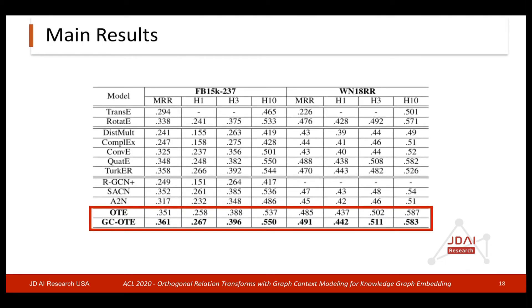This table shows the performance comparison of our model with all the baselines. We can see OTE alone already outperforms RotateE, and adding graph context to OTE achieves the best results among all these models. The numbers are taken from published papers. We also observe that adding graph context helps on Freebase data more than on WordNet data, because Freebase knowledge graph has richer graph structure.